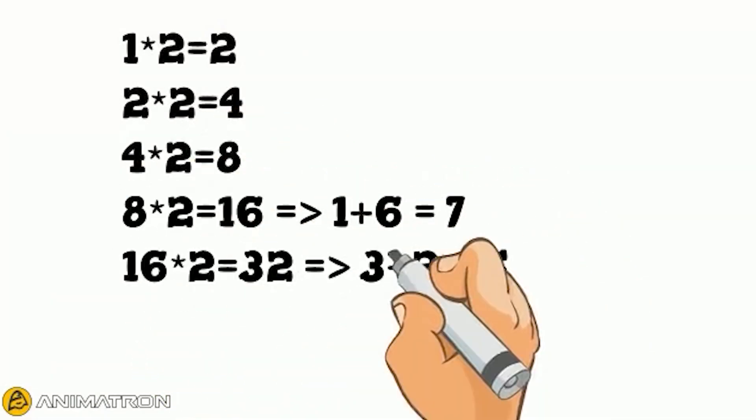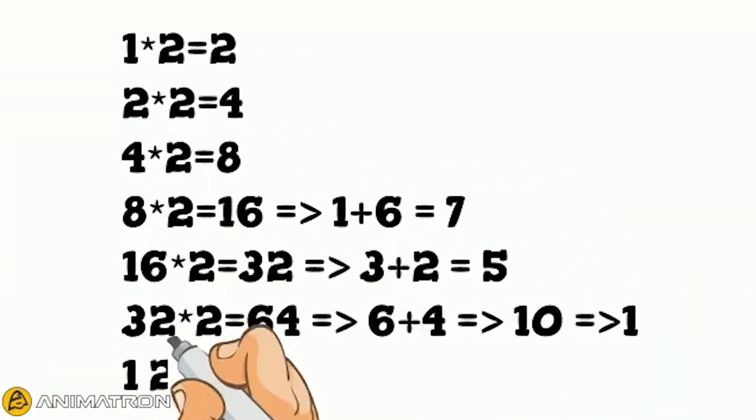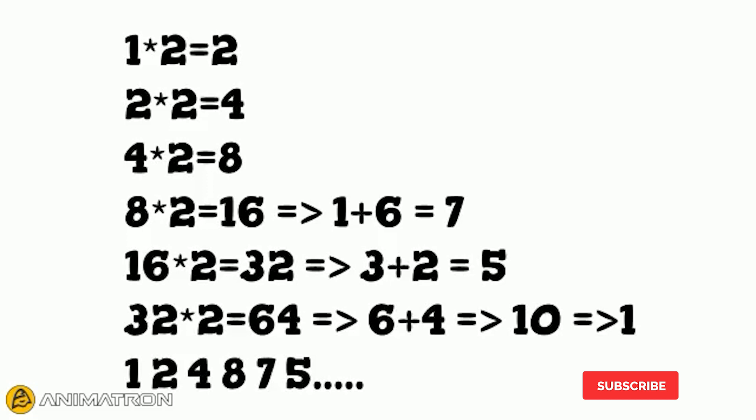Let's start from 1. Doubled it is 2. 2 doubled is 4. 4 doubled is 8. 8 doubled is 16, which means 1 plus 6, and that's equal to 7. 16 doubled is 32, resulting in 5. And 32 doubled is 64, which is 1 plus 0, a total of 1.